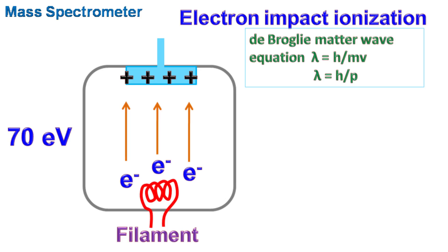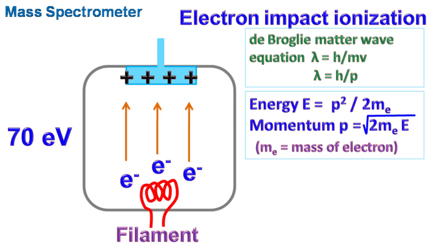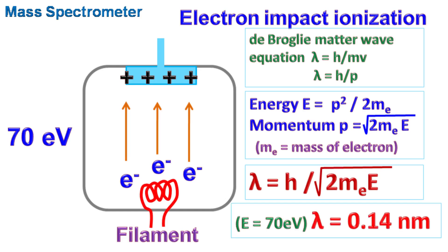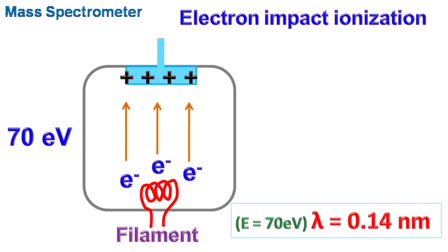Here m is the mass and v is the velocity. The product of mass and velocity is the momentum p. The energy of electron can be described as E = p²/2me, where p is the momentum and me is the mass of electron. Making arrangements in the equation we get λ = h/√(2meE). At the energy of 70 electron volts, the wavelength of electron is around 0.14 nanometers.